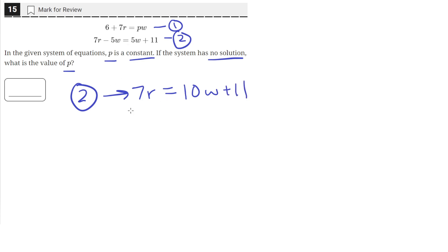So equation two is just equal to this, we just moved the negative 5w to the other side. And now we know that 7r is equal to this quantity. We can just plug it in for the 7r here.